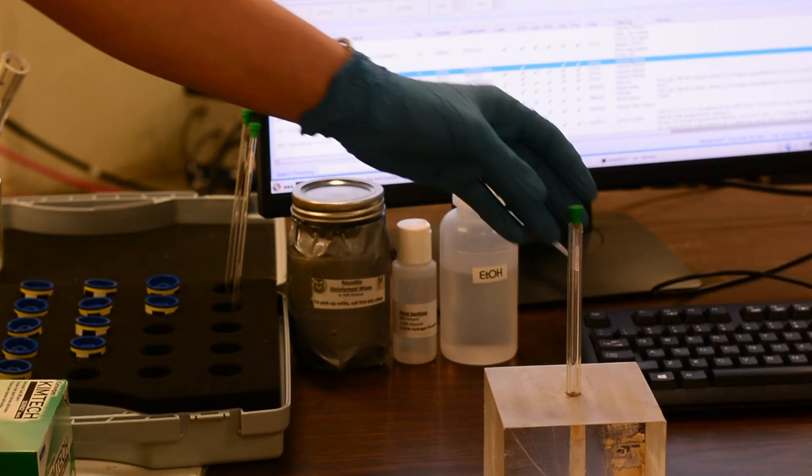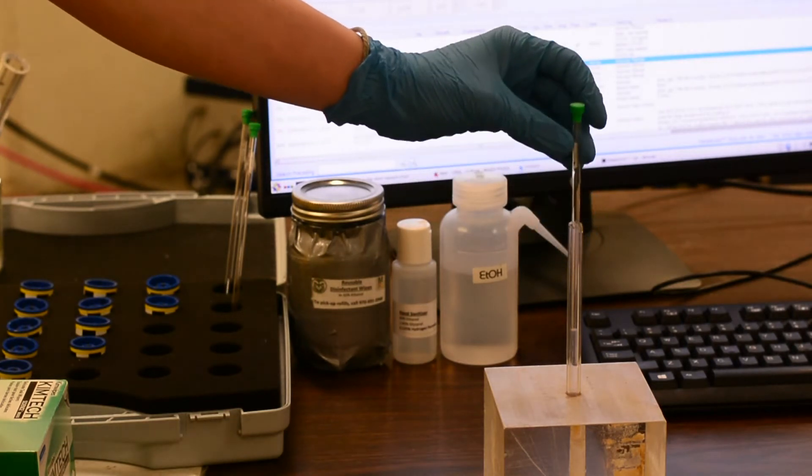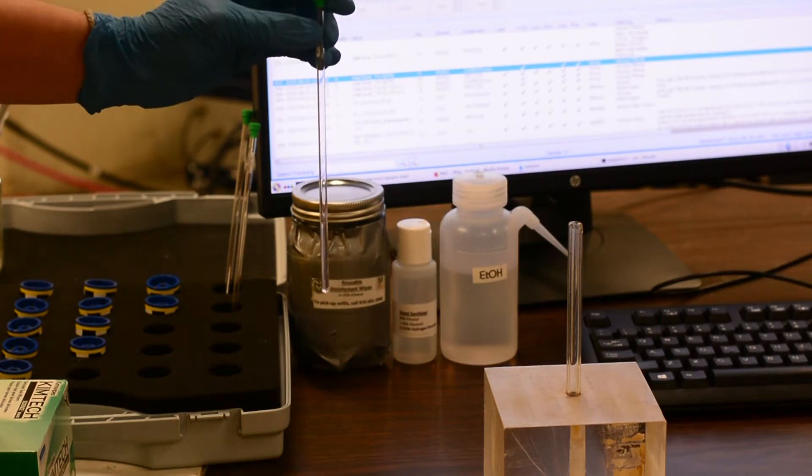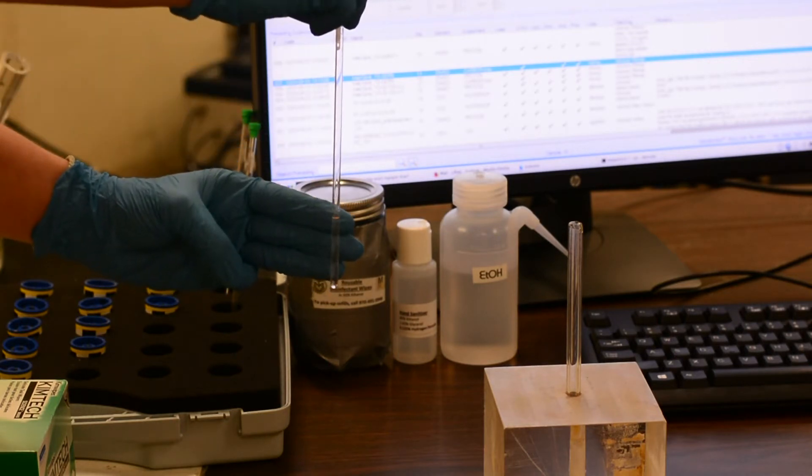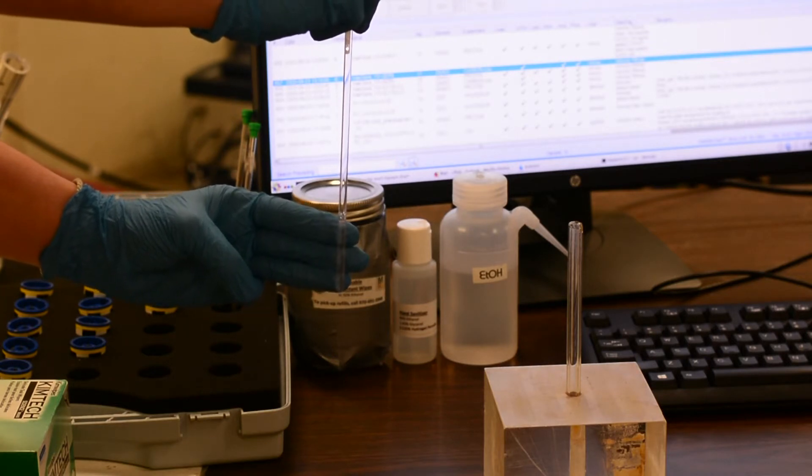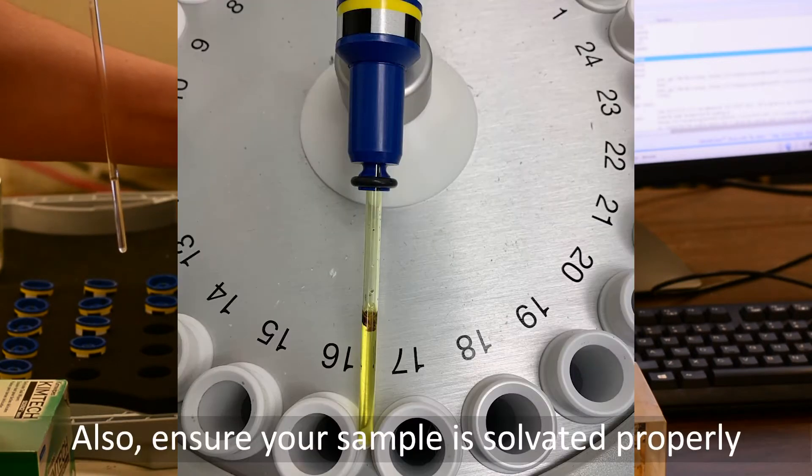The next thing to consider when preparing your sample is the amount of solvent you'll use. A good rule of thumb is the rule of three fingers. If your solvent fills up to the top of your forefinger in this image, then you should be good and have enough solvent to get a nice quality shim.